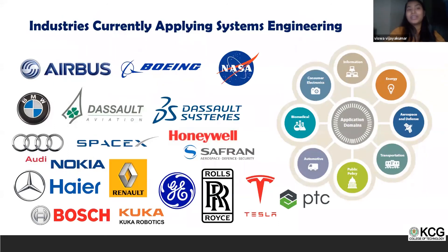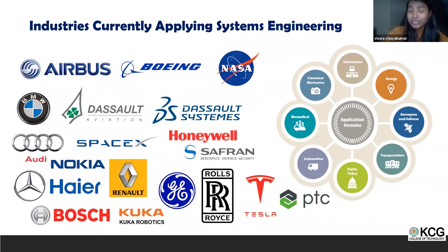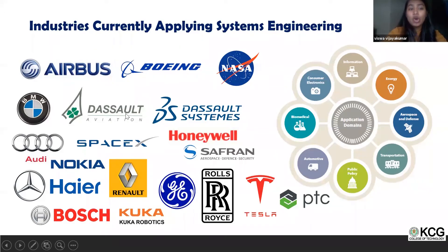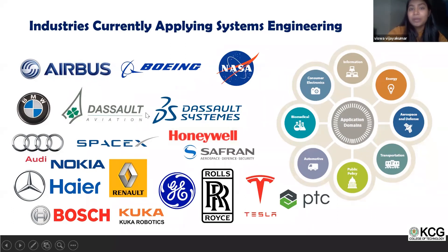Systems engineering is applied across many industries — not just aerospace. It is used in consumer electronics, information industry, energy, transportation, public policy (even elections), automotive, and biomedical industries. Major companies applying systems engineering include Airbus, Boeing, Audi, Mercedes-Benz, GE, Rolls-Royce, Tesla, SpaceX, Honeywell, and DASSAULT — to name just a few examples.